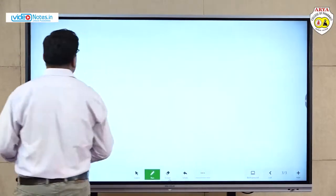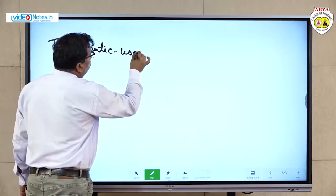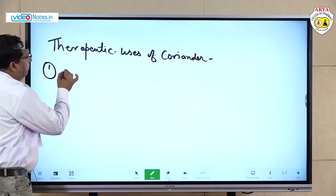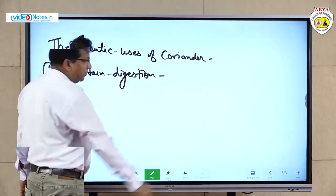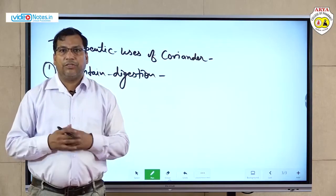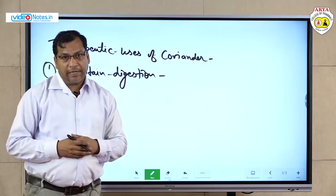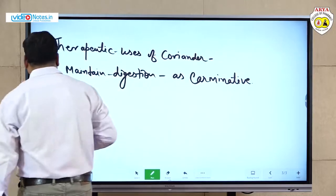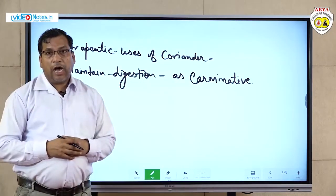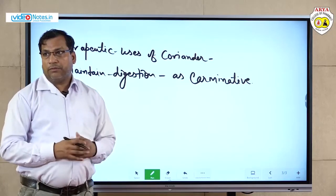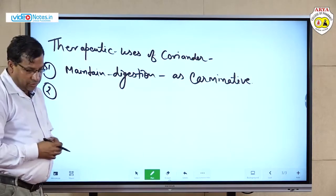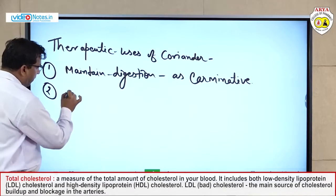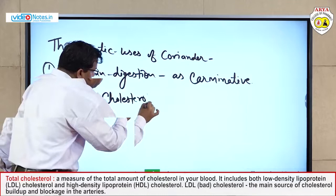Therapeutic usage of coriander: First, it is used to maintain digestion — meaning coriander increases the appetite, helps in digestion, and helps in the metabolism of food material. It also acts as a carminative. Similarly, coriander extract helps reduce heart problems in which cholesterol level is high. Coriander helps to reduce cholesterol levels.